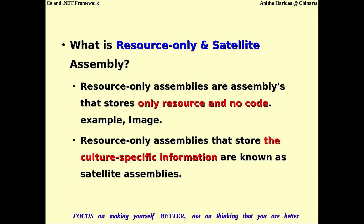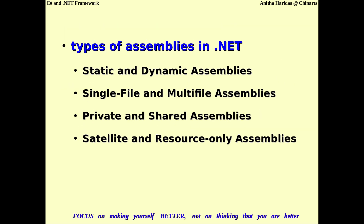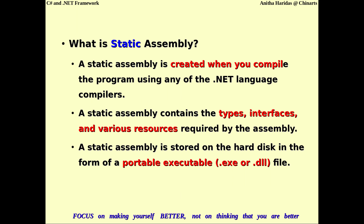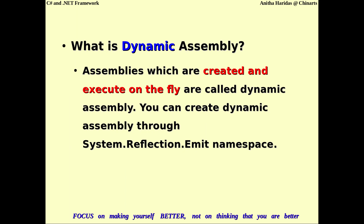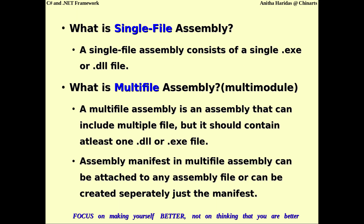These are the different types of assemblies available. Static assemblies are created when you compile using your .NET language compiler, resulting in a portable executable as a .exe or .dll file. Dynamic assemblies are created using a reflection object on the fly. A single file assembly contains only one .exe or .dll file, whereas if you have more than one .exe or .dll file, you call it a multi-file or multi-module assembly.